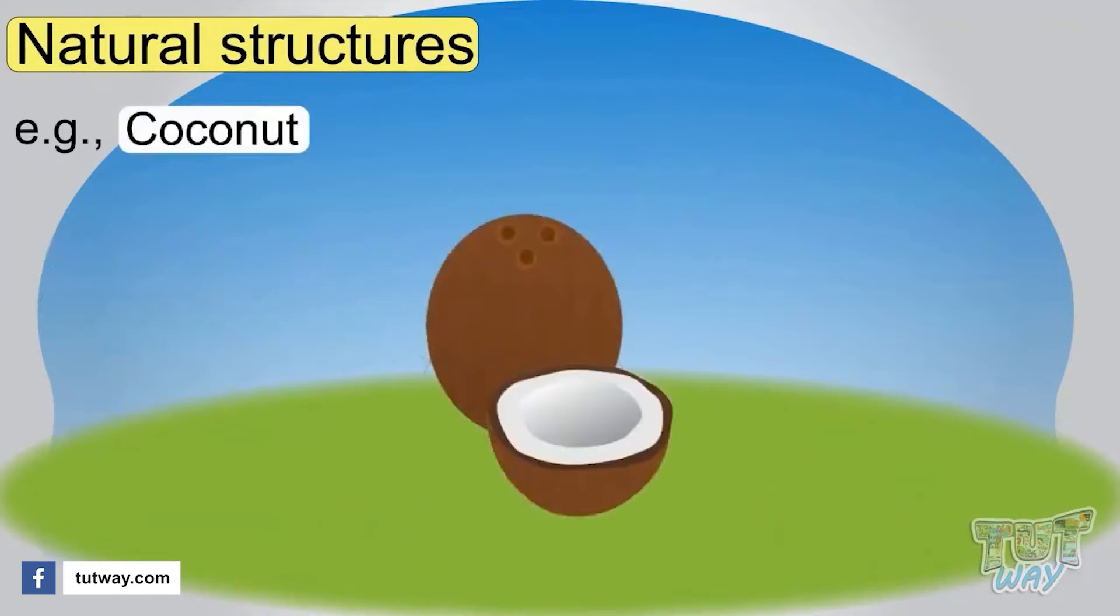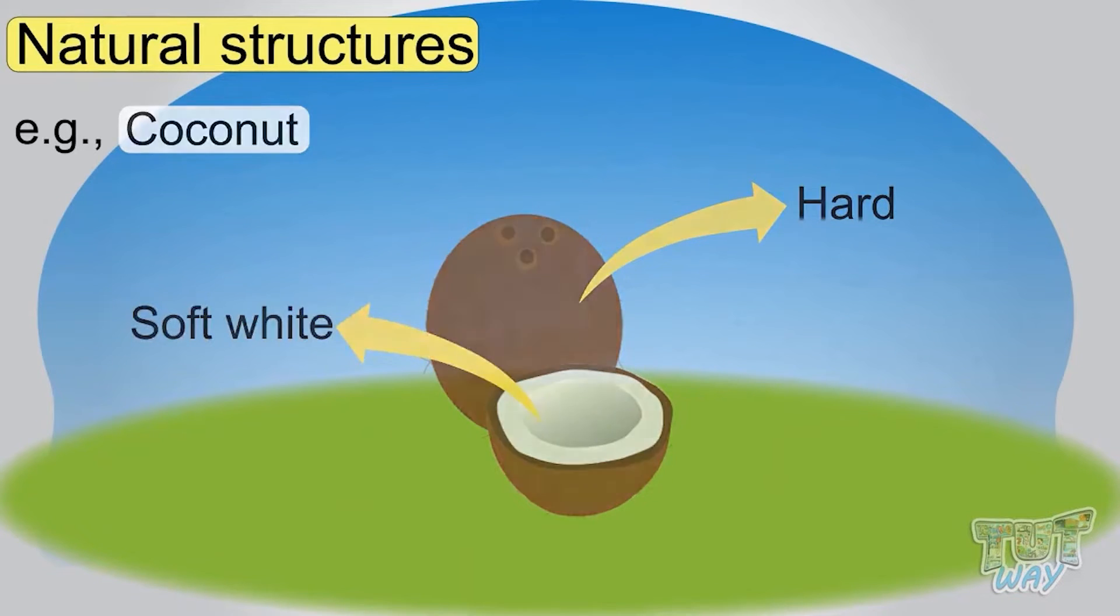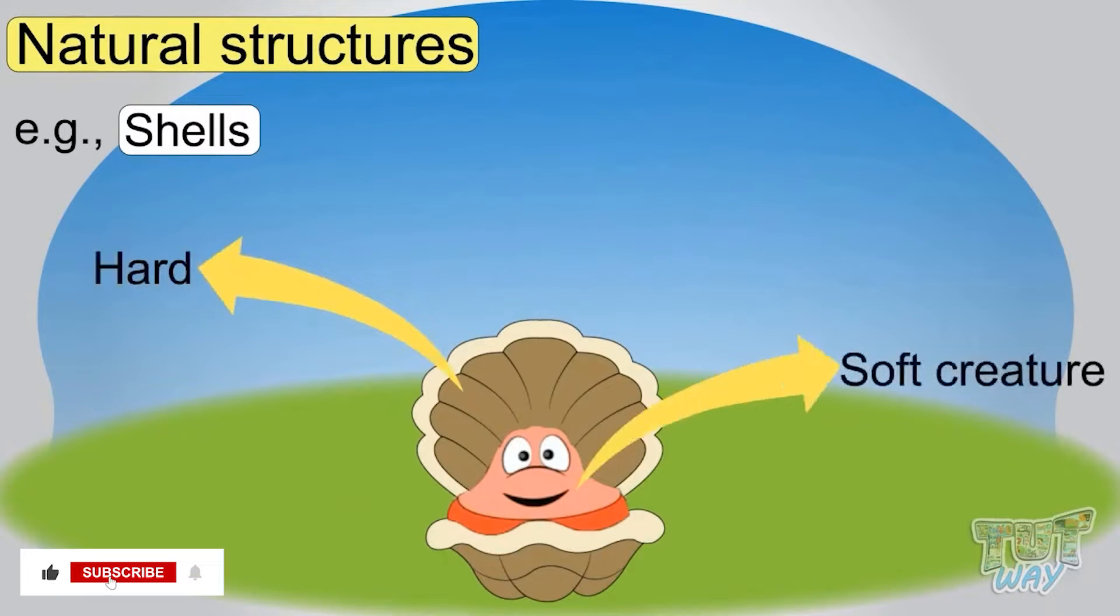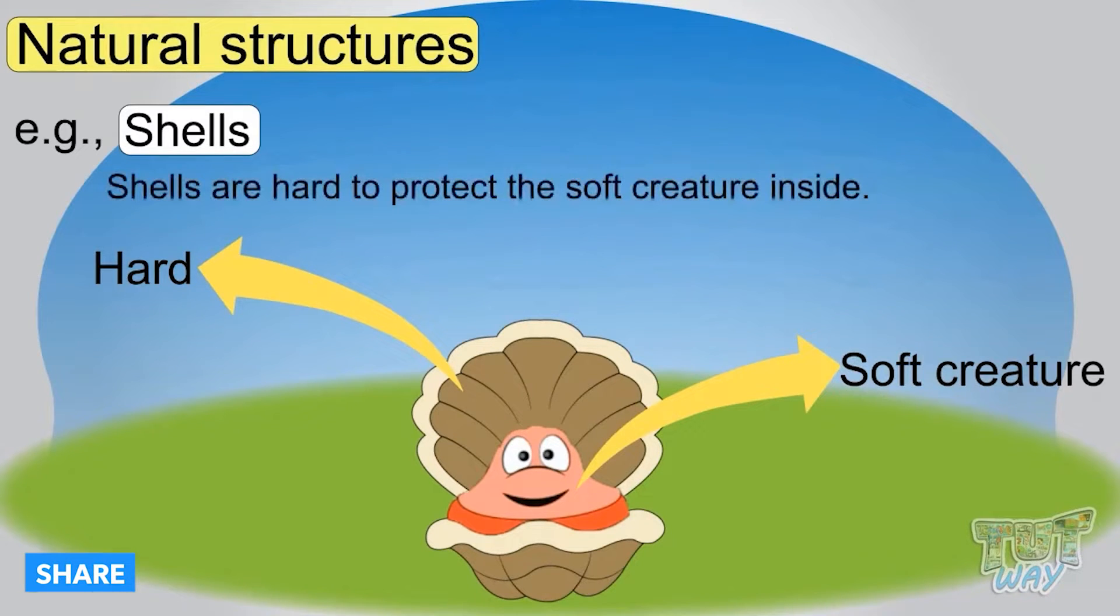Coconut is a natural structure which is hard from the outside and soft and white from the inside. Shells are a natural structure that are hard from the outside and have a soft creature inside. Shells are hard to protect the soft creature inside.